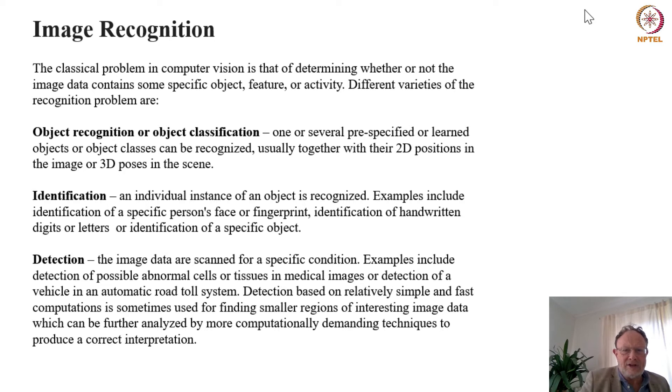It can also be things like identification of handwritten digits. So the task is not just to decide whether it's a digit or not because that's object classification, but rather saying this is an A, this is a B and so on.